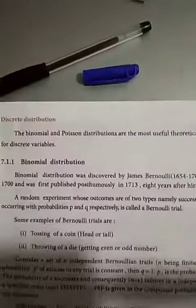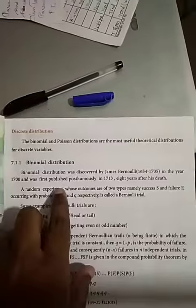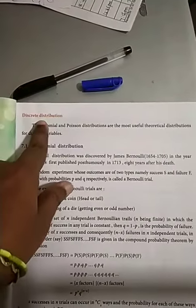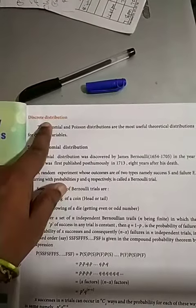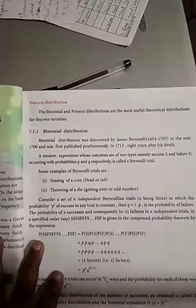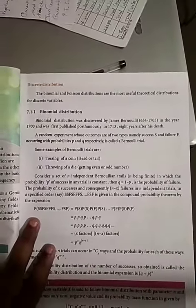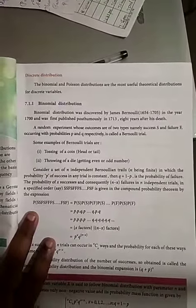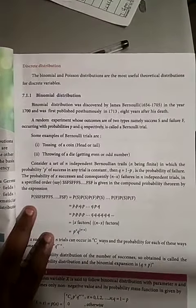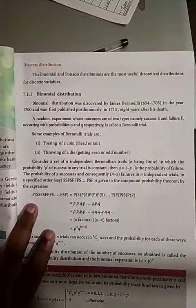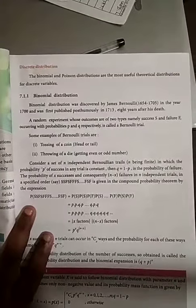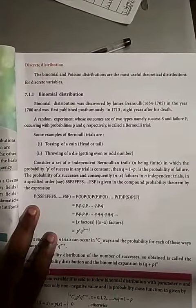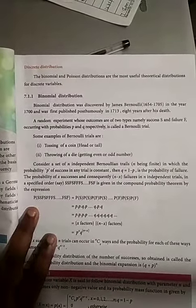Now, what is discrete distribution? The binomial and Poisson distributions come under discrete distribution. Now, what is binomial distribution? Binomial distribution was discovered by James Burnley. We already learnt the binomial theorem in our 11th standard, second unit, last exercise.